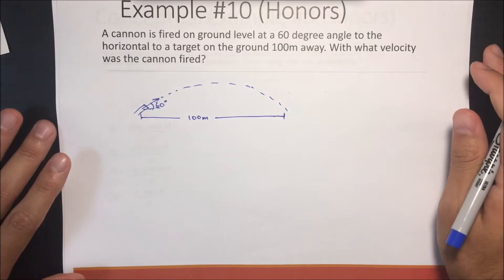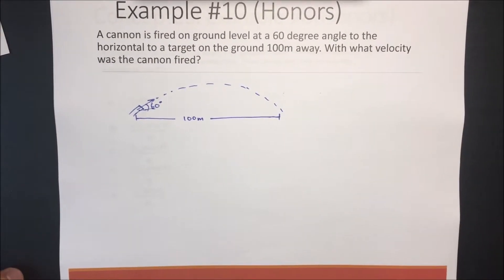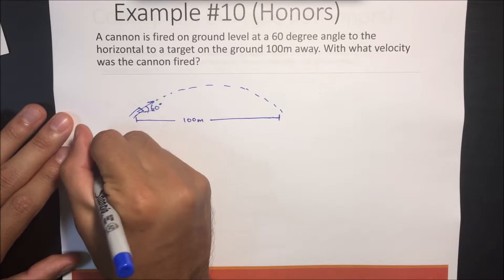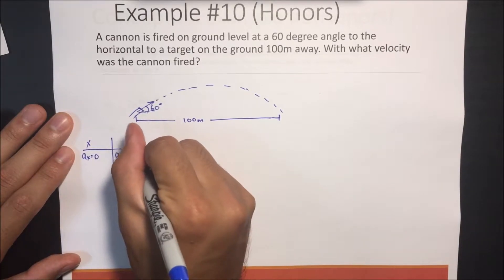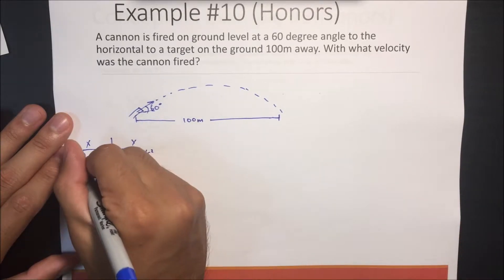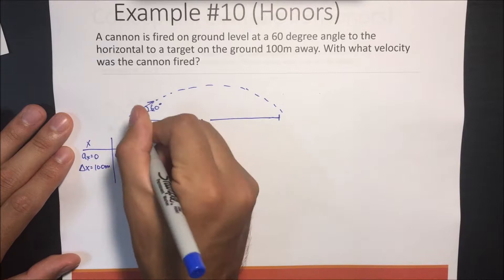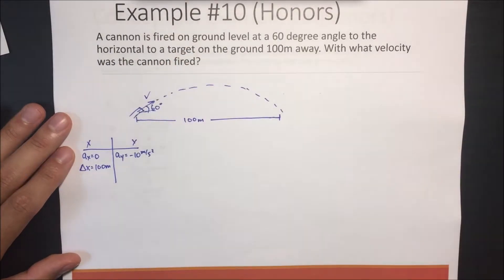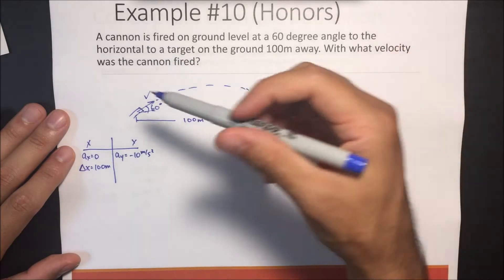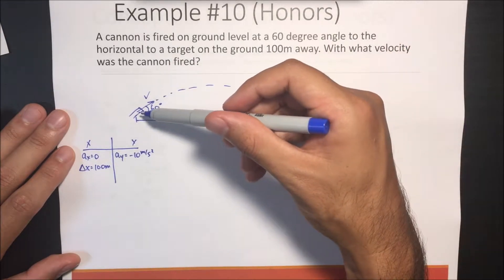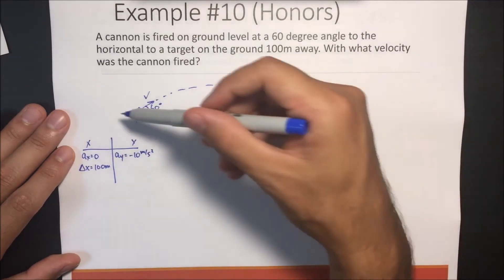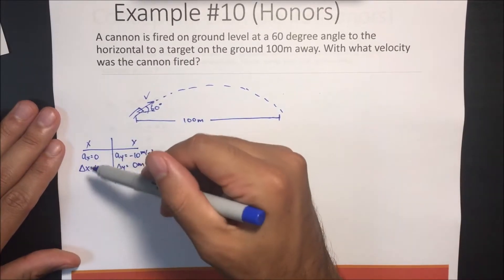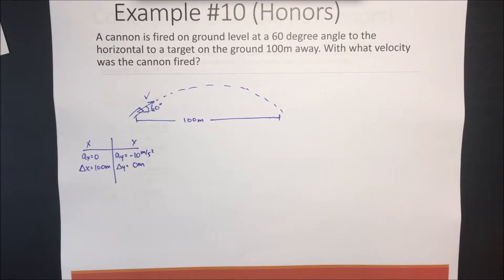This is a pretty difficult problem, so let's write out everything we know in the x and y directions. Acceleration in x equals zero; acceleration in y equals negative 10 m/s². Displacement in x is 100 meters — that's how far the cannonball travels. Another thing we know is the displacement in the y direction: it starts and ends at the same y-plane, so displacement in y equals zero meters. We only have two pieces of information for both directions.